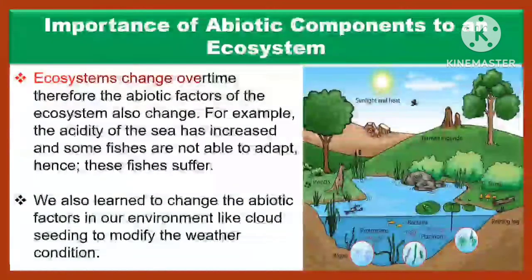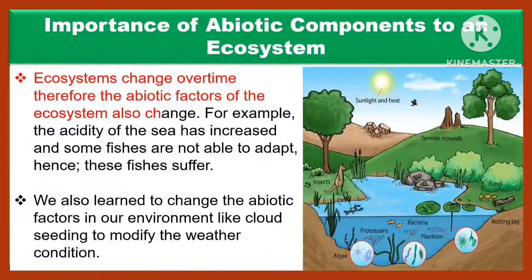Ecosystems change over time. Therefore, the abiotic factors of the ecosystem also change. For example, the acidity of the sea has increased and some fishes are not able to adapt. Hence, these fishes suffer.